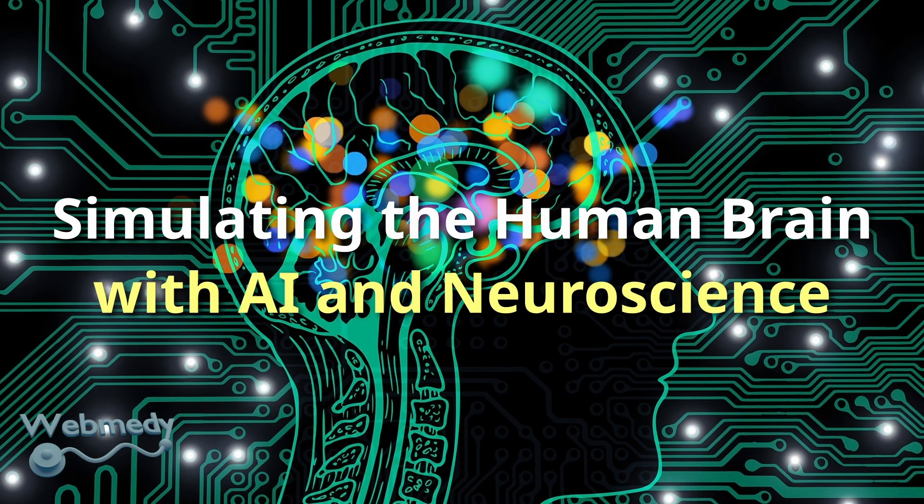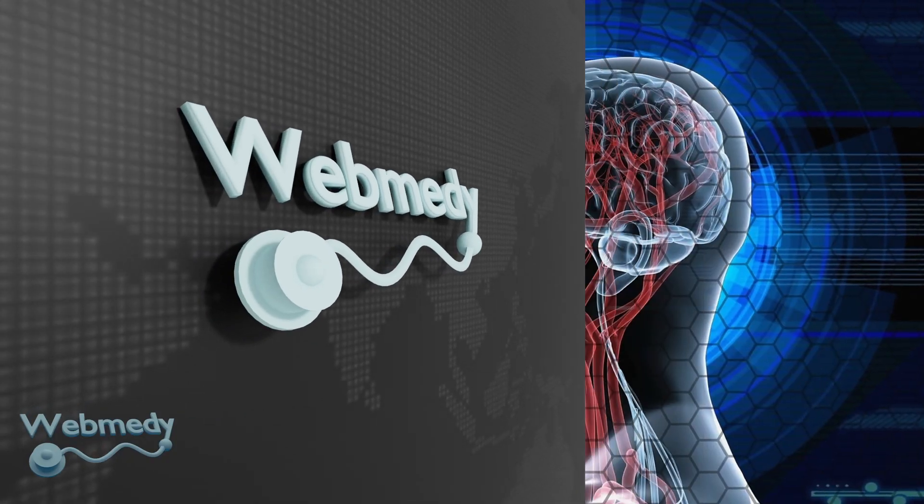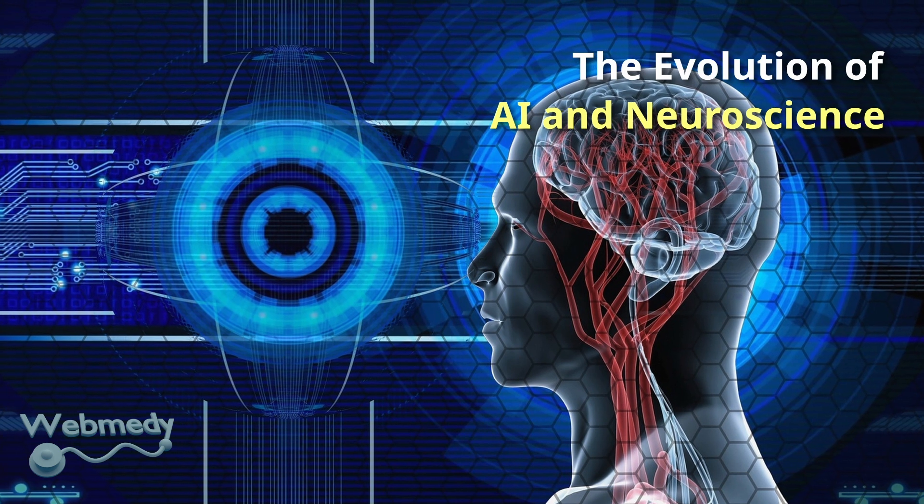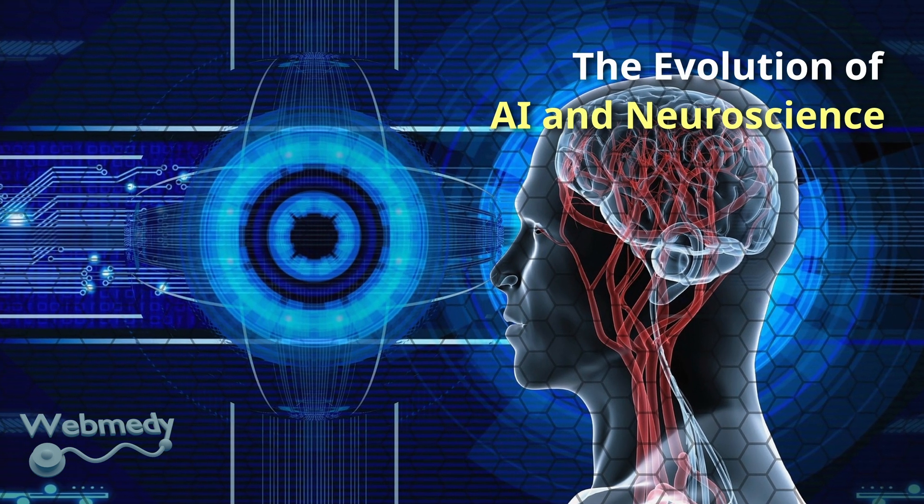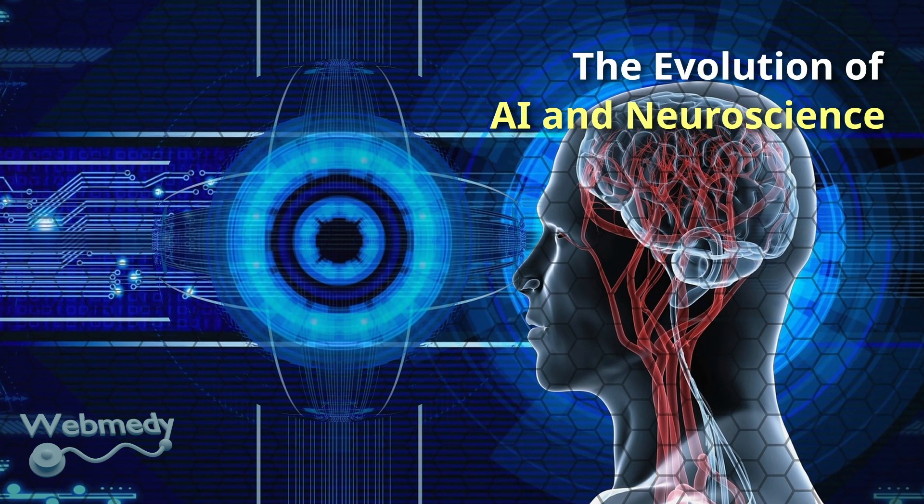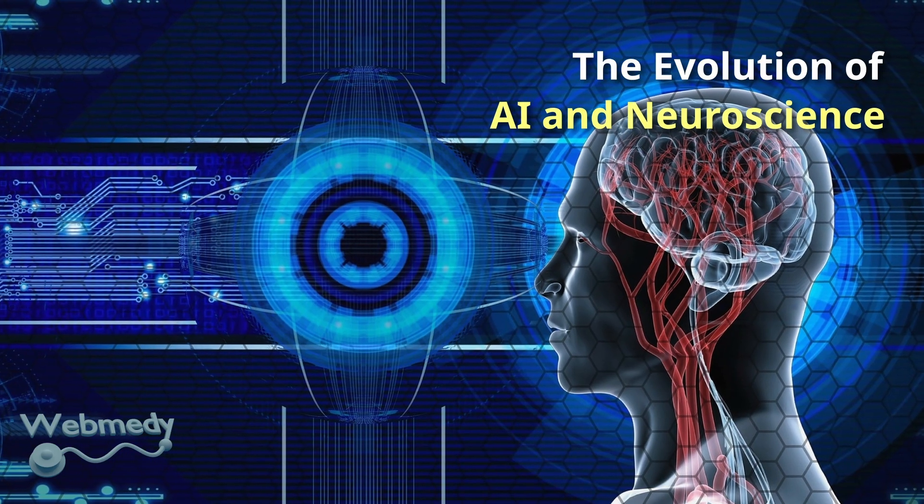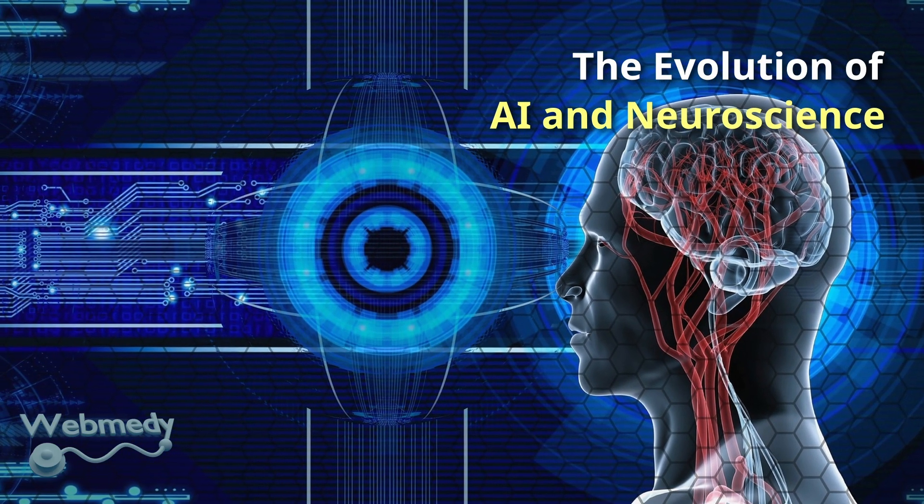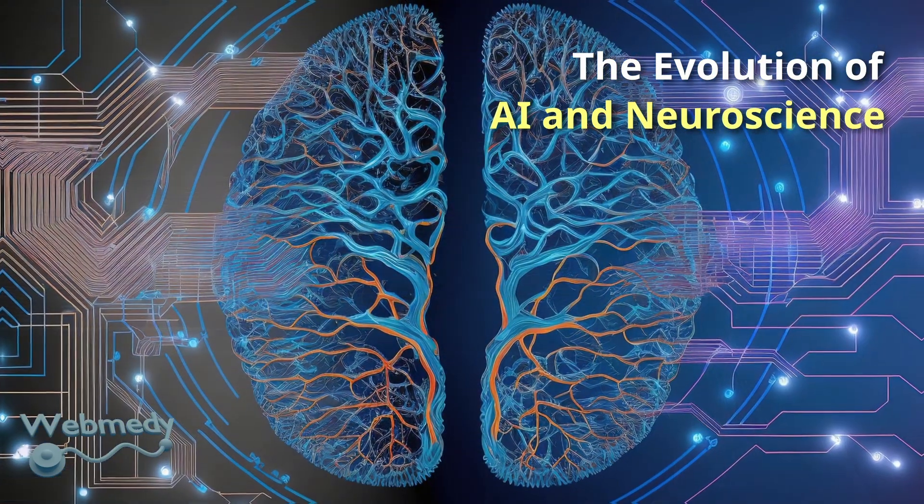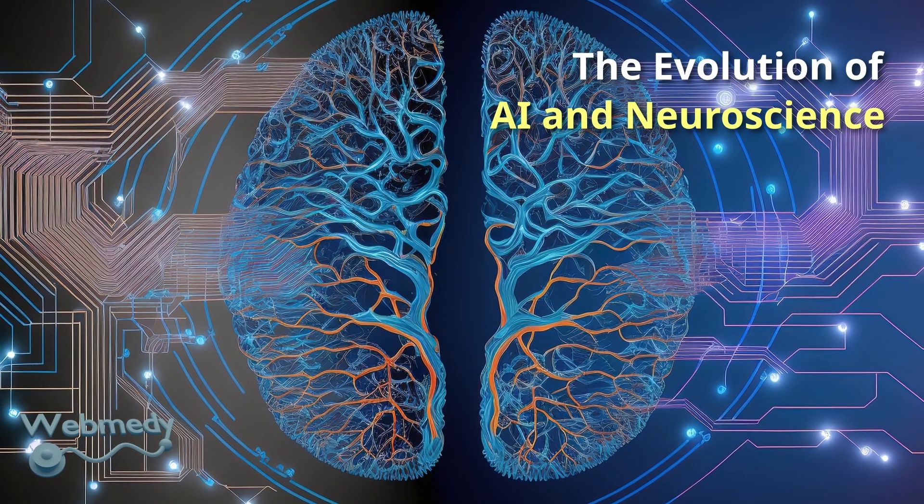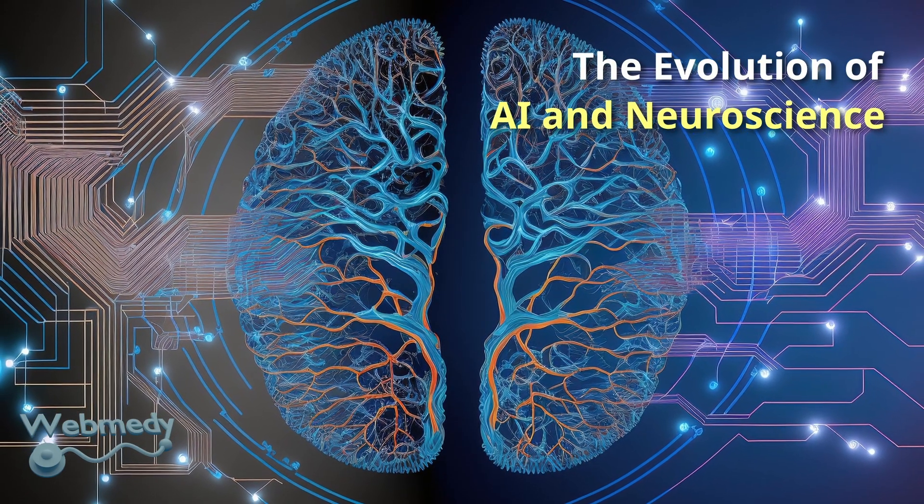The evolution of AI and neuroscience: the journey of understanding the human mind has come a long way. AI and neuroscience have often drawn inspiration from each other. Early AI research was based on mimicking human cognitive processes, while neuroscience uses AI to analyze complex neural data.